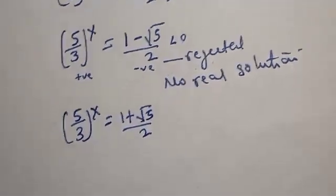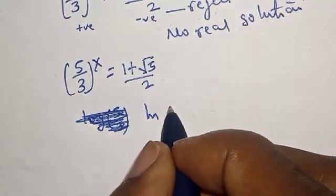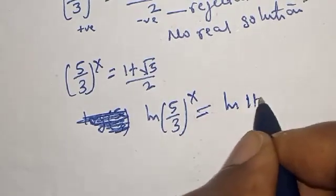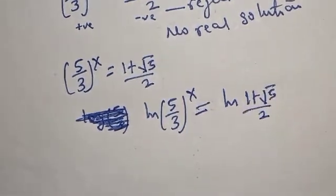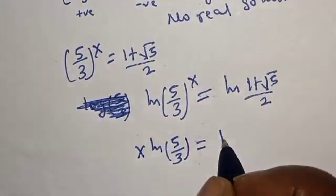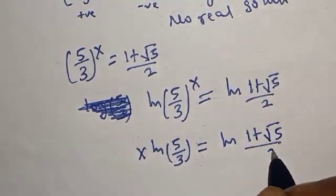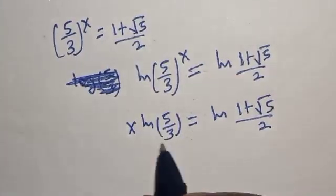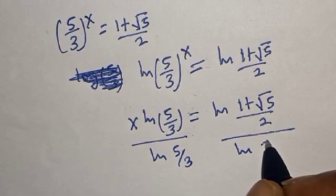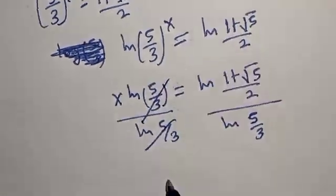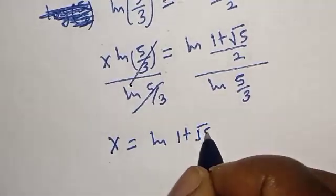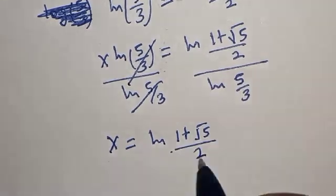So (5/3) to the power of s equals (1 plus root 5) over 2. Taking the natural log of both sides: natural log of (5/3) to the power of s equals natural log of (1 plus root 5) over 2. This gives s times natural log of (5/3) equals natural log of (1 plus root 5) over 2. Dividing both sides by natural log of (5/3), those cancel, giving s equals natural log of (1 plus root 5) over 2.